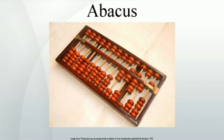The earliest archaeological evidence for the use of the Greek abacus dates to the 5th century BC. The Greek abacus was a table of wood or marble, preset with small counters in wood or metal for mathematical calculations. This Greek abacus saw use in Achaemenid Persia, the Etruscan civilization, ancient Rome, and until the French Revolution, the Western Christian world. A tablet found on the Greek island Salamis in 1846 AD, the Salamis tablet, dates back to 300 BC, making it the oldest counting board discovered so far.